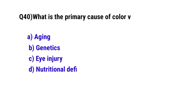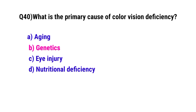Question number 40. What is the primary cause of color vision deficiency? The correct option is B. Genetics. Thanks for listening.